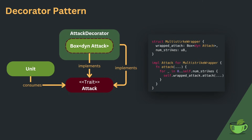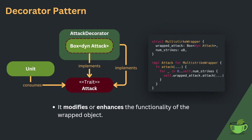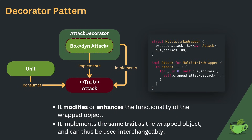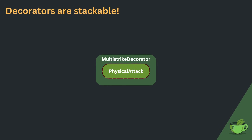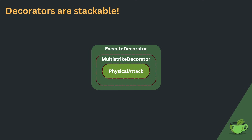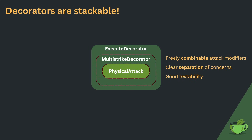A decorator has two very important features that set it apart from a normal wrapper: it modifies or enhances the functionality of the wrapped object, and it implements the same trait as the wrapped object and can thus be used interchangeably. With this design, we can now decorate not only any base attack, but other attack decorators as well, as they implement the attack trait. So you could decorate a base physical attack with a multi-strike decorator and on top put the execute decorator. This design satisfies our goal for freely combining attack modifiers, and because each base attack and modifier is defined in its own struct, we have a clear separation of concerns. As the wrapped attack is only referenced via a trait object, it can be swapped for testing, improving our testability by heaps and bounds.